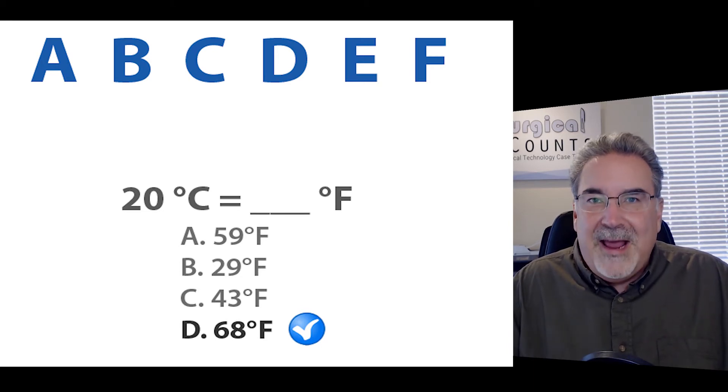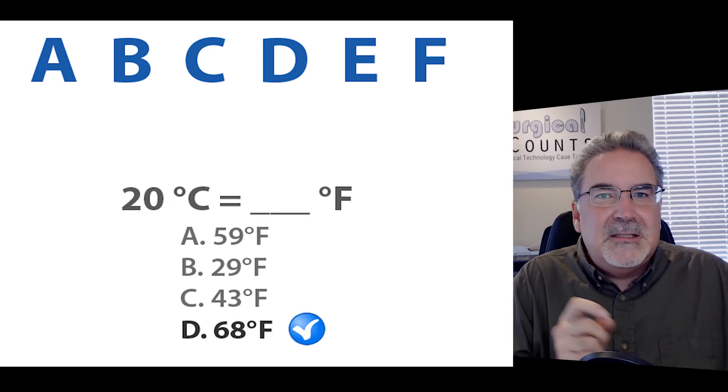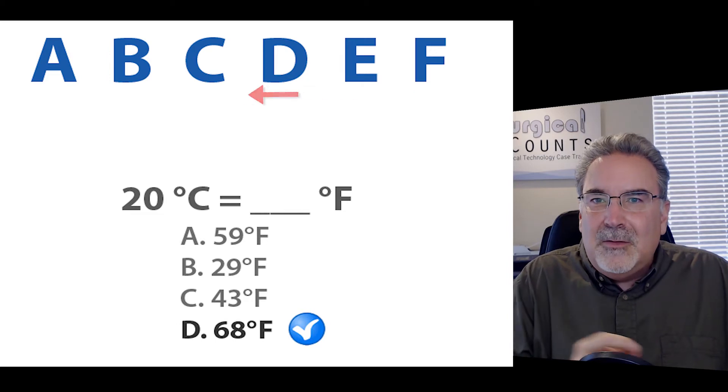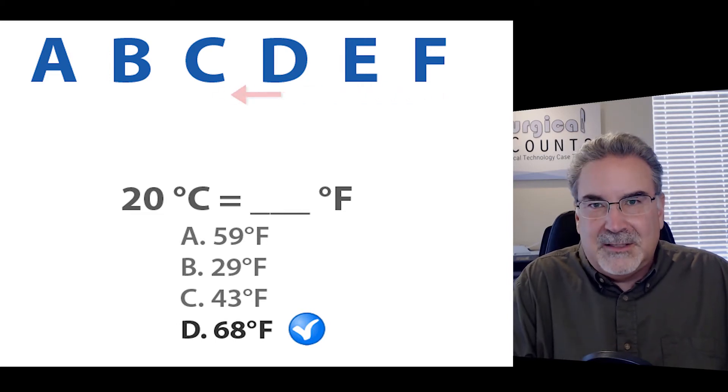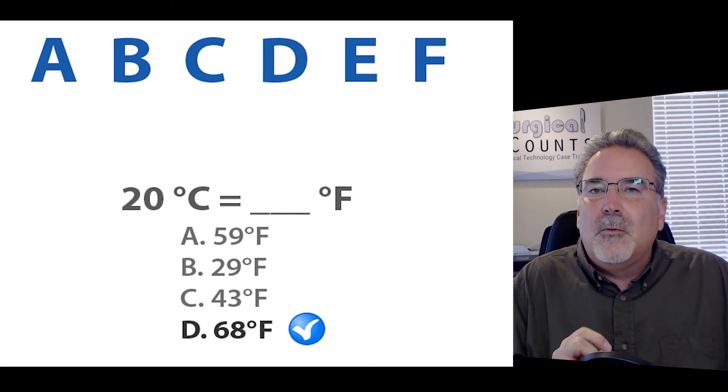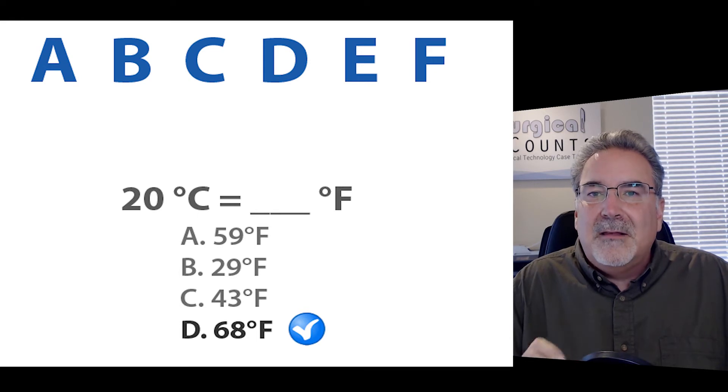We start off with A, B, C, D, E, F. But in this case, we're going from F to C. We're going down the sequence. We're going down the letter scale, which means everything that we're going to do is going to make the number smaller.